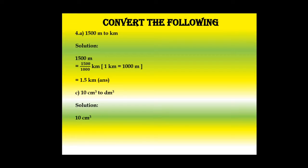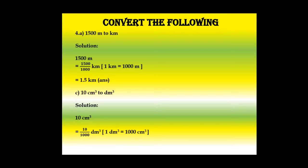Look at the solution. First we write 10 cubic centimeters, then divide by 1000, and the unit turns into cubic decimeters. Side note: 1 cubic decimeter is equal to 1000 cubic centimeters. After dividing, we get the answer 0.01 cubic decimeters.